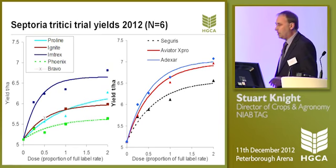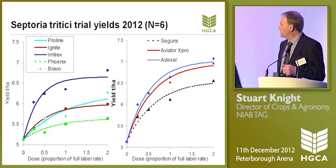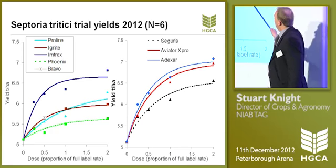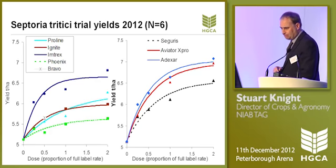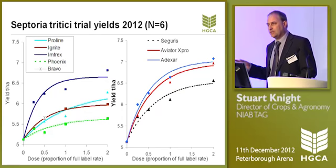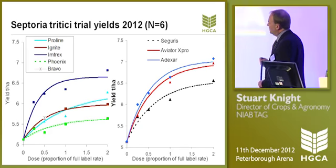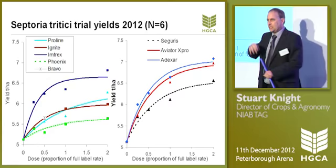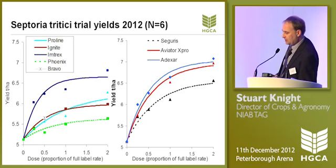Moving to the right-hand side with our SDHI-azole mixes, this really reflects the levels of septoria control we were getting in 2012. There's really nothing to choose between Aviator X-Pro and Adexar — very similar yield responses. Here's Seguris, not giving such good septoria eradication and not giving such a good yield response. The other thing to point out is that although the Intrex fluxapyroxad looks as good as Adexar for septoria control, the mixture products are continuing to improve yield over and above what we get from the straight. That's another reason why you need to use these products sensibly — with the azole partner.